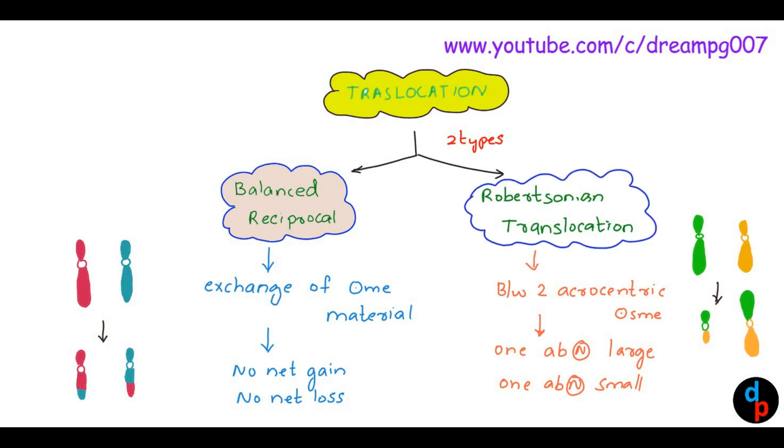That's the Robertsonian translocation, and it is the pathogenesis for Down syndrome.